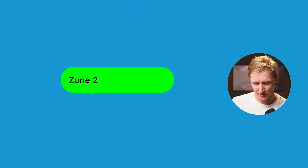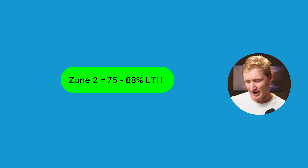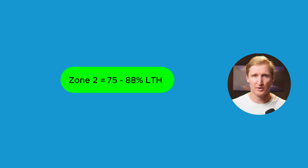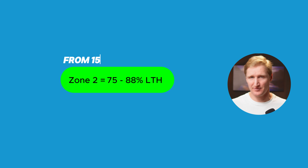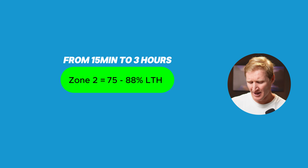First, we have the Zone 2 run. For me, that's 75 to 88 percent of lactate threshold heart rate, and I find that heart rate works really well. Zone 2 runs can be anything from 15 minutes to three hours depending on what you're training for, but they are the bread and butter.